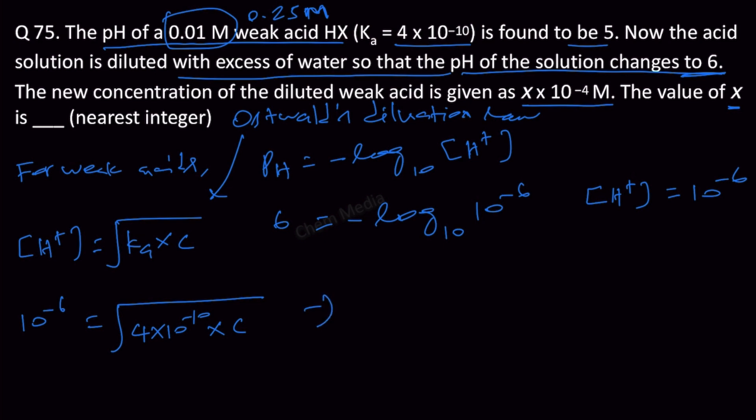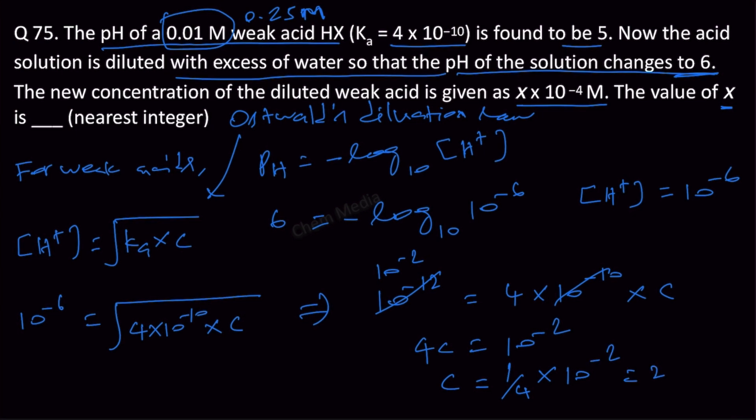Therefore, C equal to 1 by 4 times 10 to the power minus 2. So 1 by 4 is 0.25, which we can write it as 25 times 10 to the power minus 4. So that means the value of X is 25.